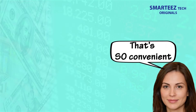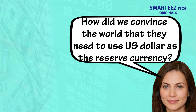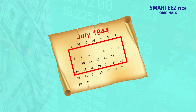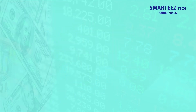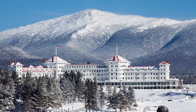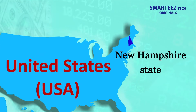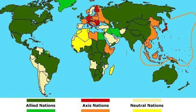Given the huge advantage the US dollar enjoys as the reserve currency, the obvious question is: how did it become the reserve currency? It all happened in July 1944 — between July 1st and 22nd — in a hotel named the Mount Washington Hotel, located in the small town of Bretton Woods in the northeastern US state of New Hampshire.